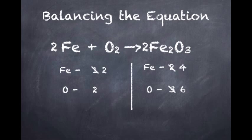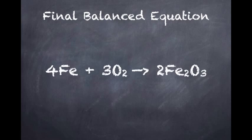Next, I must add a 3 to the oxygen to balance the oxygen, but the iron is still left unbalanced. Therefore, I must add a 4 next to the iron in order to balance the equation. The final balanced equation reads 4Fe plus 3O2 reacts to produce 2Fe2O3.